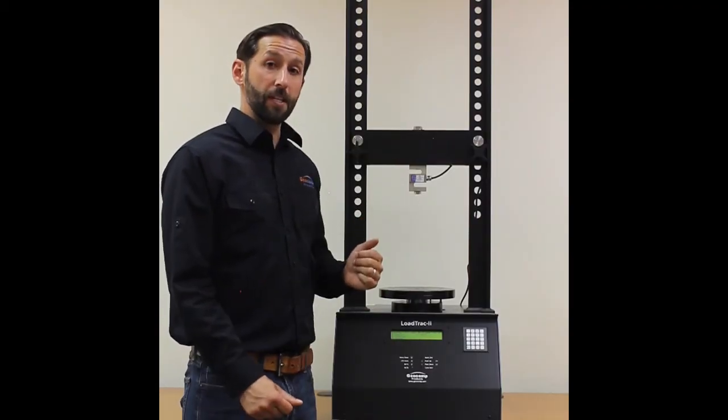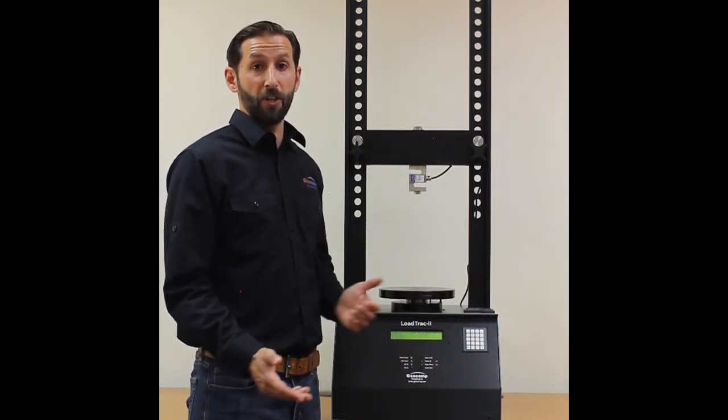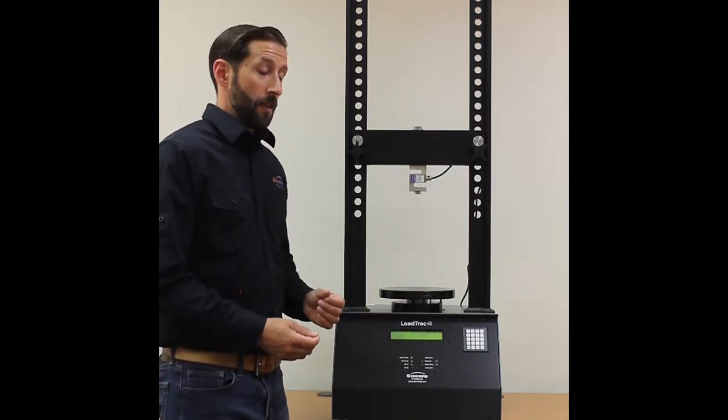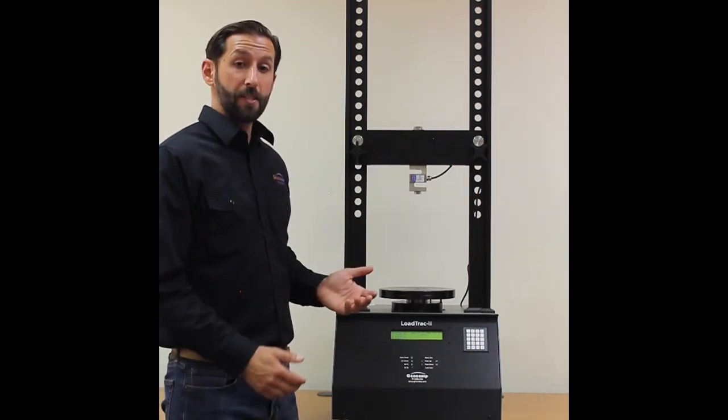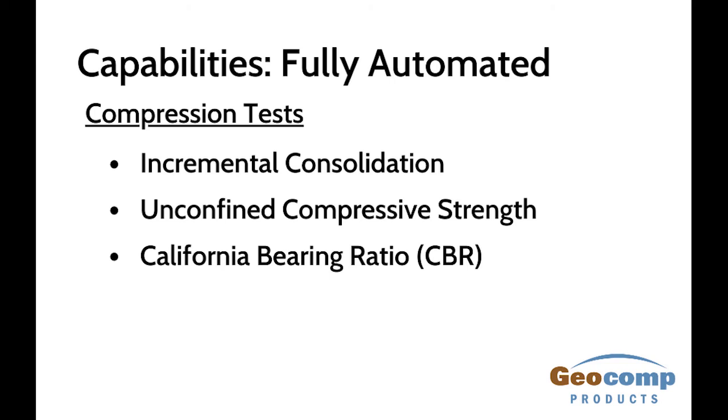Let's talk a little bit about the capabilities of the LoadTrack and why it's such a versatile load frame for your lab. With the proper accessories and software, the LoadTrack 2 can perform fully automated a wide range of compression tests. These might include incremental consolidation, unconfined compressive strength, and California bearing ratio, also known as CBR.